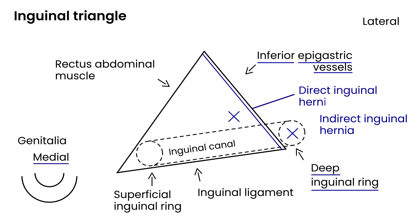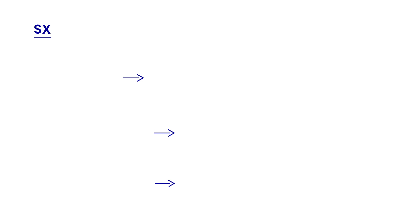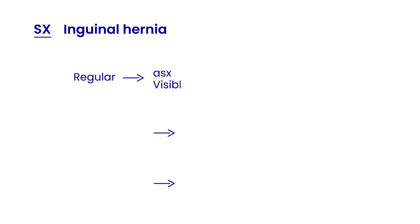The symptoms depend on the severity of the hernia. A basic inguinal hernia can be asymptomatic — there are no symptoms and it will just present as a visible bulge. The skin is still covering it, so you don't actually see the intestines; you just see the bulge. The intestines have protruded through the abdominal wall but the skin covers them. You might also have some vague discomfort.